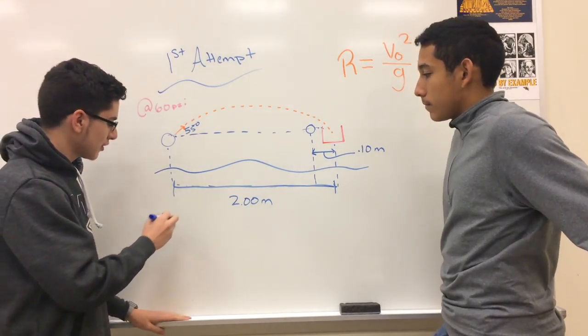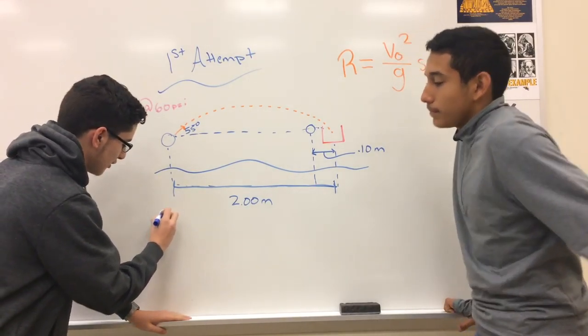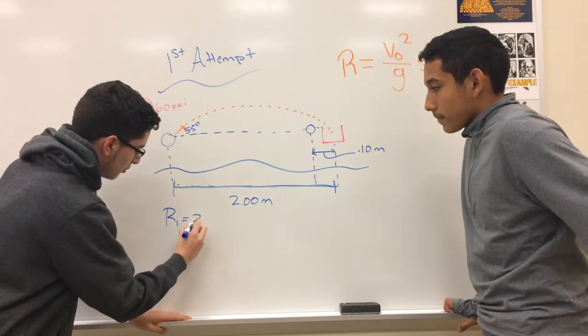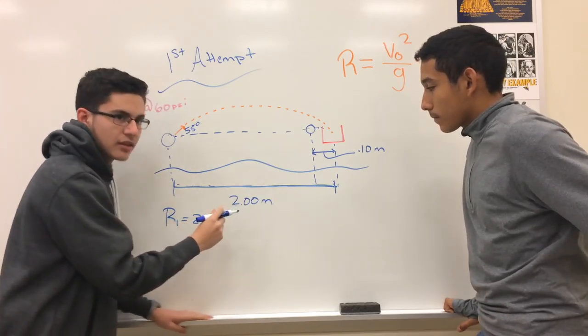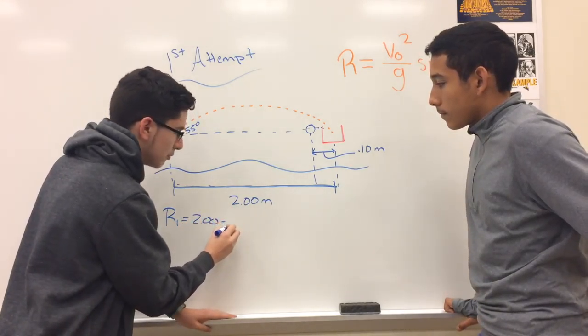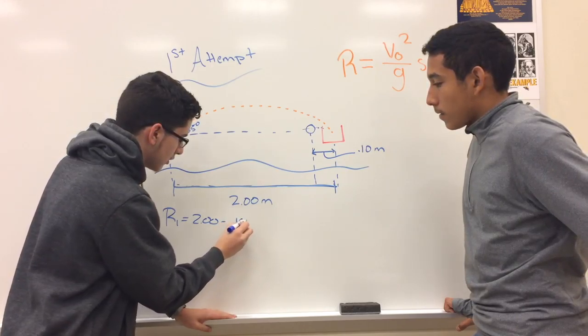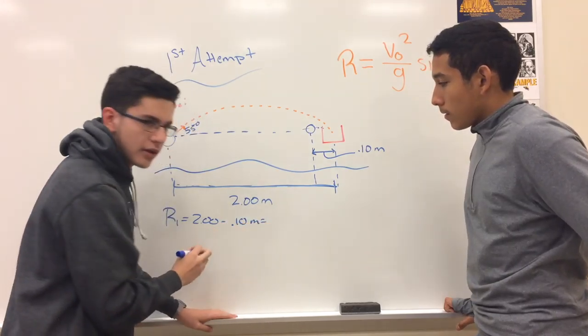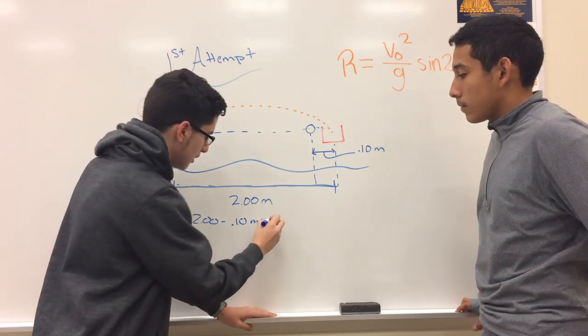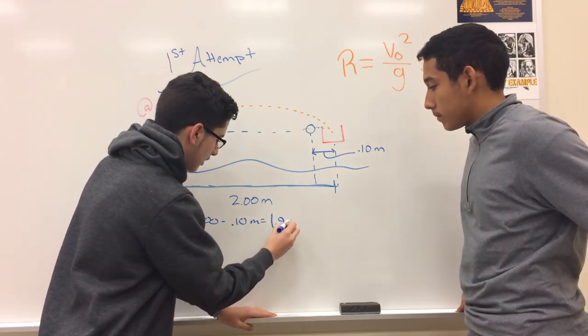So in this first attempt, the range would be the two meters minus how much it was short by, which would be a tenth of a meter. So the actual range of this would be 1.9 meters.